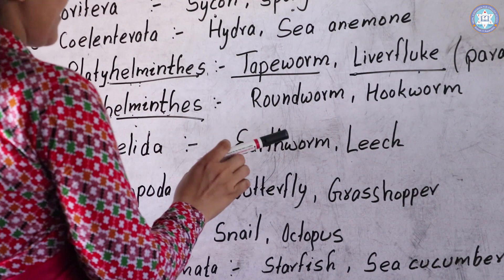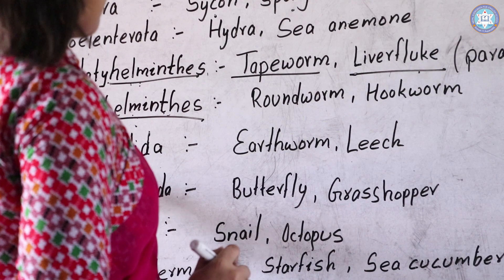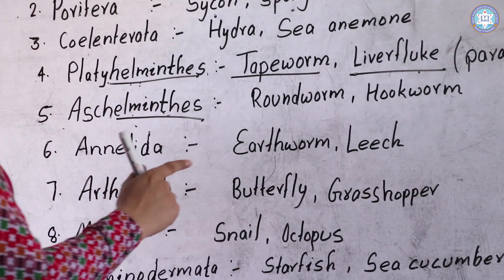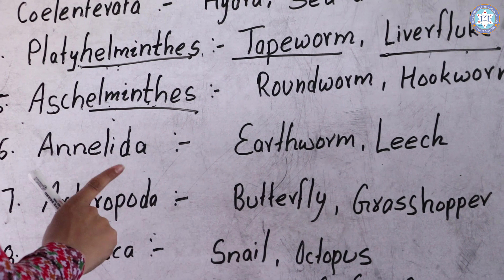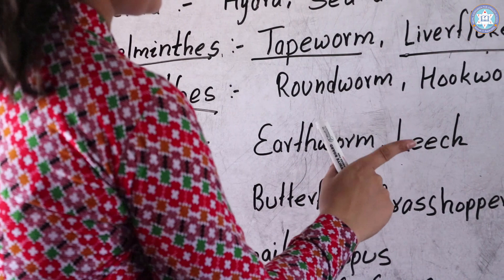The sixth phylum is Annelida, and the examples are Earthworm and Leech. I think all of you have seen earthworms and leeches in your surroundings. They are the examples of phylum Annelida.